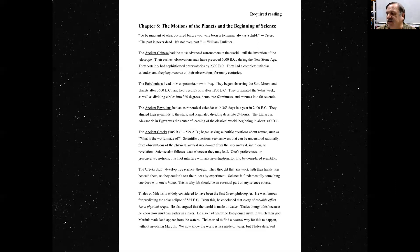Thales of Miletus is widely considered to have been the first Greek philosopher. He was famous for having predicted the solar eclipse of 585 B.C. The Iron Age in Europe began at about 1000 B.C. So this was still rather early, 585 B.C., about as a known predicted solar eclipse. From this, he concluded that every observable effect has a physical cause.